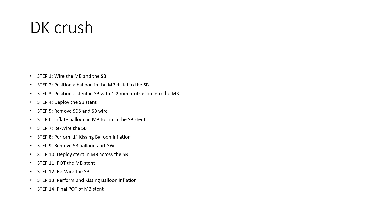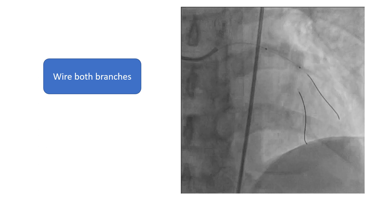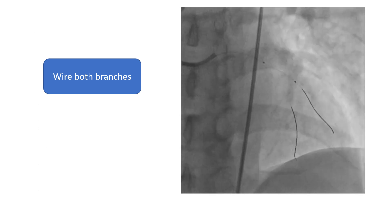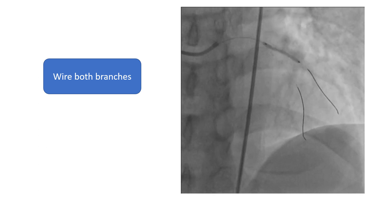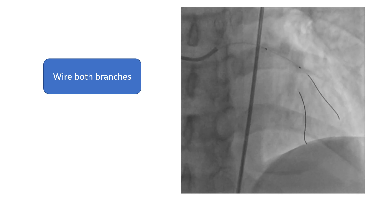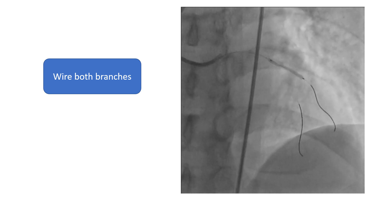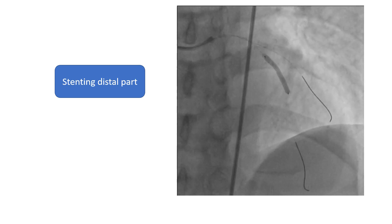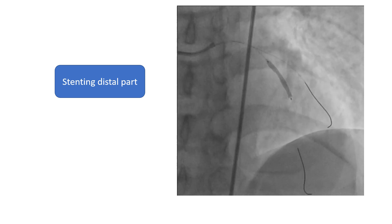There are many steps for the DK crush technique. You don't have to memorize them all — common sense will lead you from one step to the other. The first step is to wire both branches. In this case, we need to predilate the diagonal since it was subtotal. Then we need to stent the distal part of the LAD, and it's important that the overlap should not be at the bifurcation lesion.